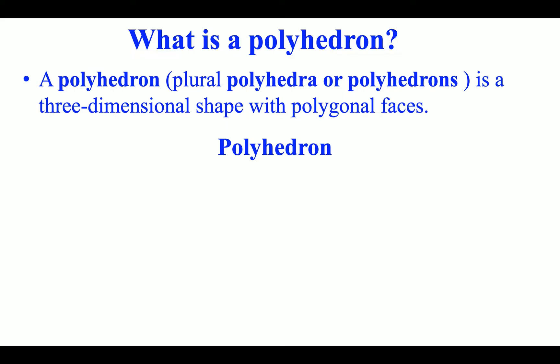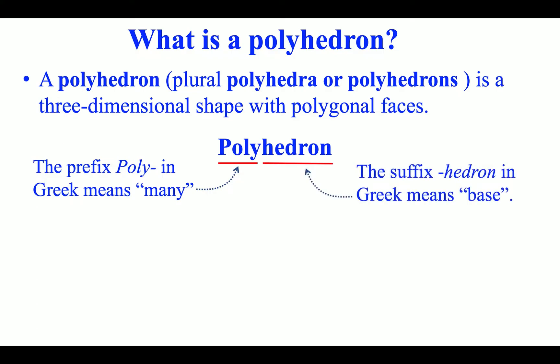What is a polyhedron? A polyhedron, plural polyhedra or polyhedrons, is a three-dimensional shape with polygonal faces. The prefix poly in Greek means many. The suffix hedron in Greek means base.